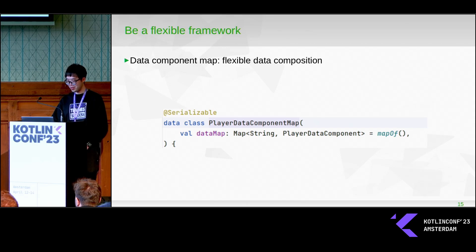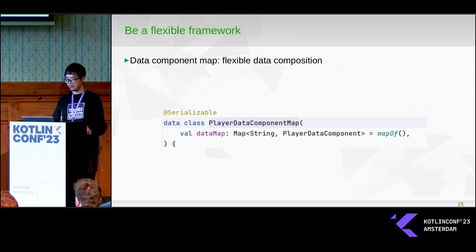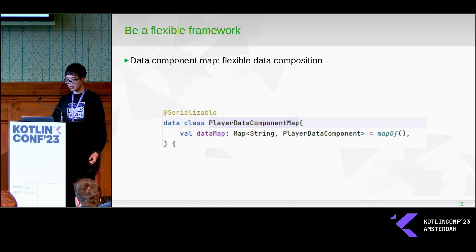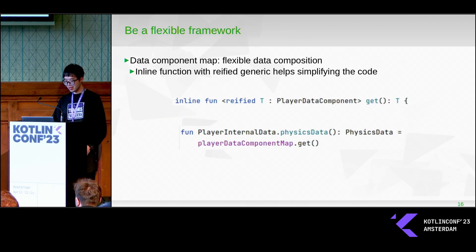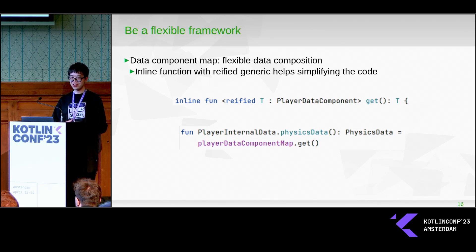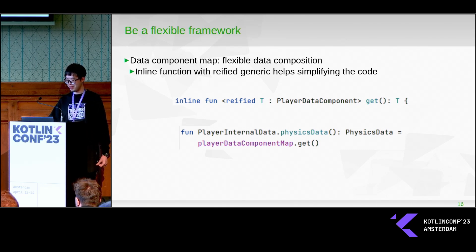The second problem is that I want to keep my framework flexible, because it has to work for any types of data and any types of model, so you need to have flexible data composition. I really like that Kotlin has reified generic functions to help tackle the type erasure problem on the JVM, and it helps simplify the code quite a bit.